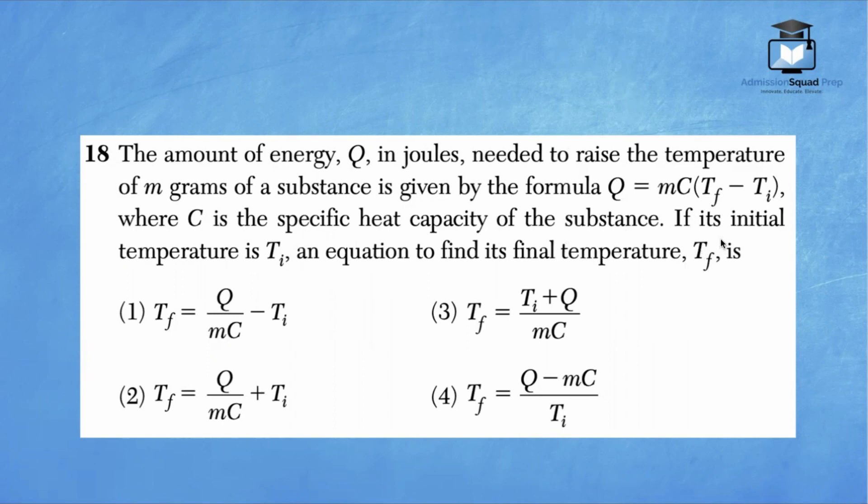So we are solving here for T sub F. We want to isolate T sub F. So we'll go ahead and isolate that variable. Let's start off by writing our equation. We have Q equals m times C times, open parentheses, T sub F minus T sub I. And our goal is to isolate T sub F. The first step would be to undo this multiplication bond. So let's divide both sides of this equation by MC. And this MC is going to cancel out. Now we have Q over MC equals T sub F minus T sub I.